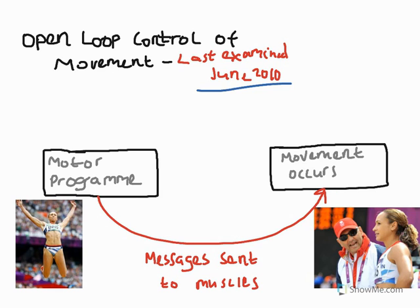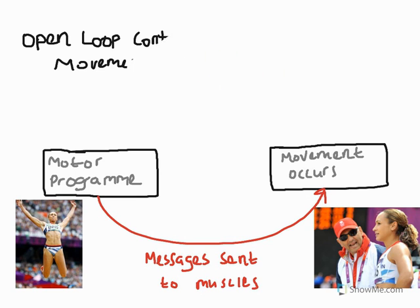This topic is due to be examined — last examined in June 2010 — so it's very much a possibility for your paper on the 15th of this month, so make sure you are ready. We're going to talk today about three primary points in describing open loop control, and what we're going to use as an example is a long jumper.